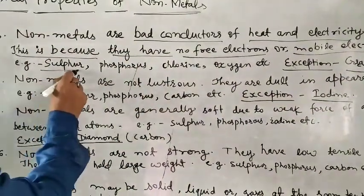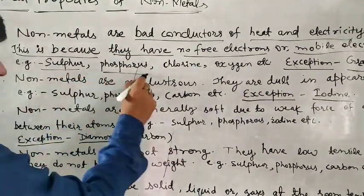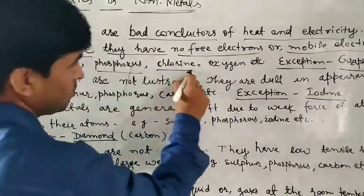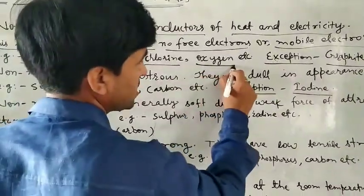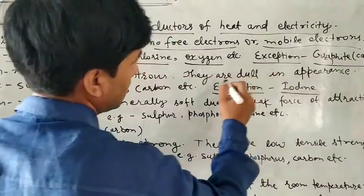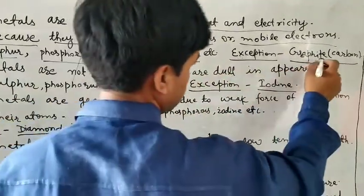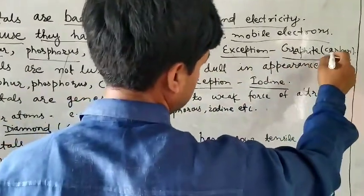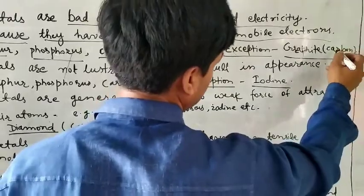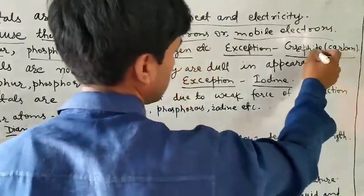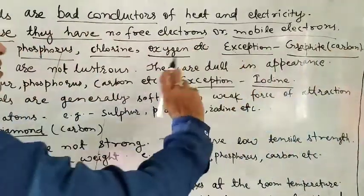For example, sulfur, phosphorus, chlorine, oxygen are bad conductors. The only exception is graphite, which is an allotrope of carbon that conducts electricity.